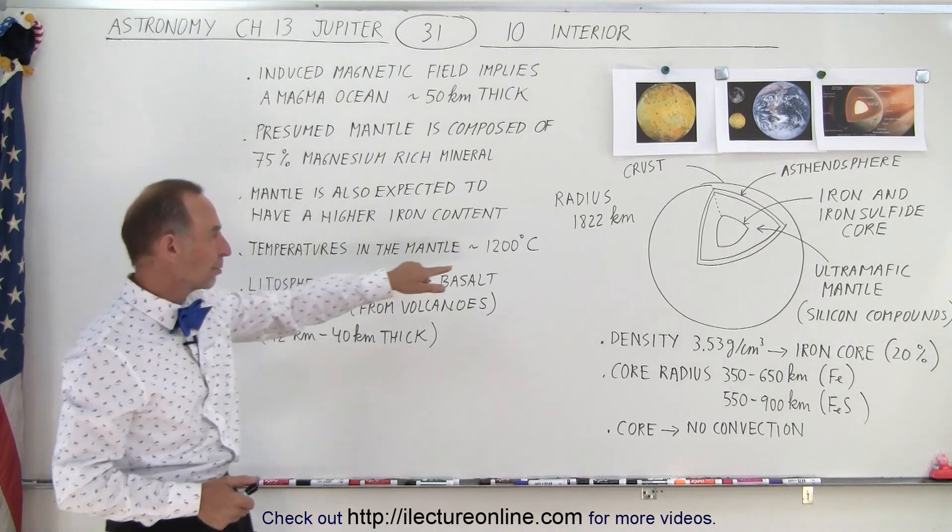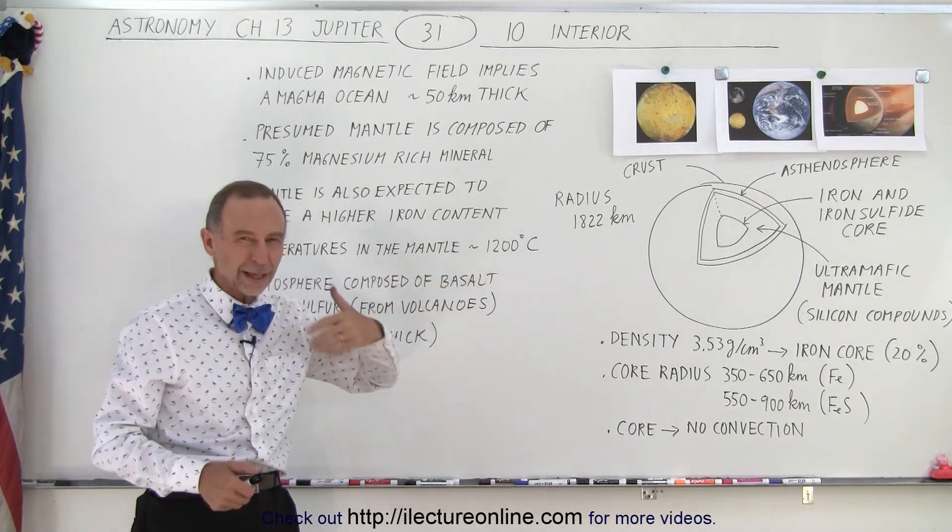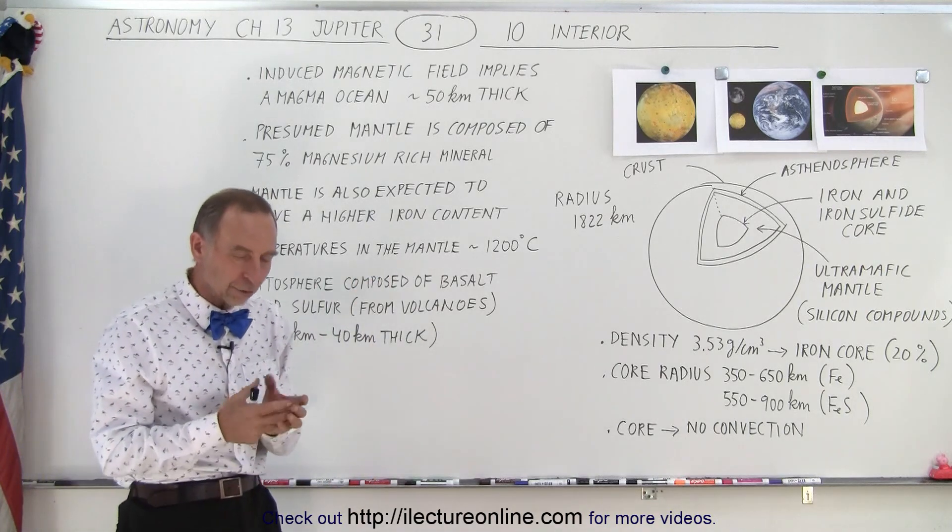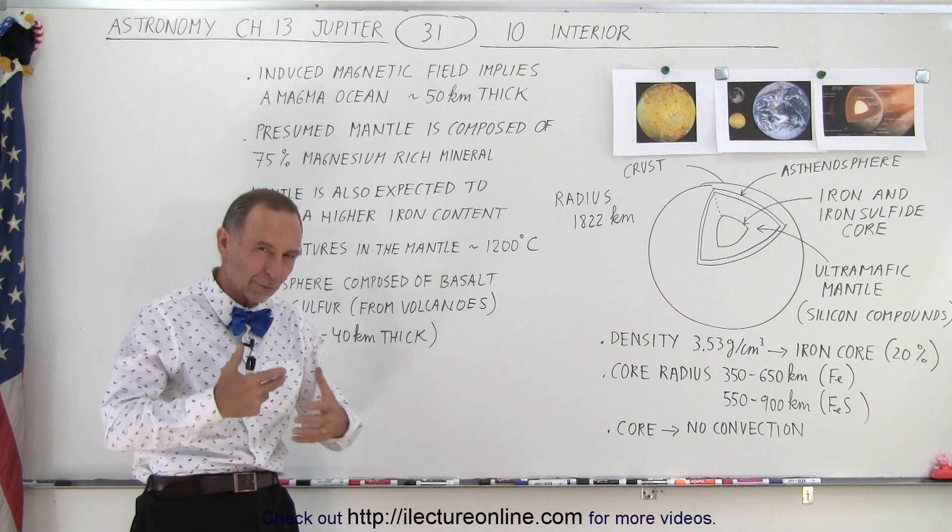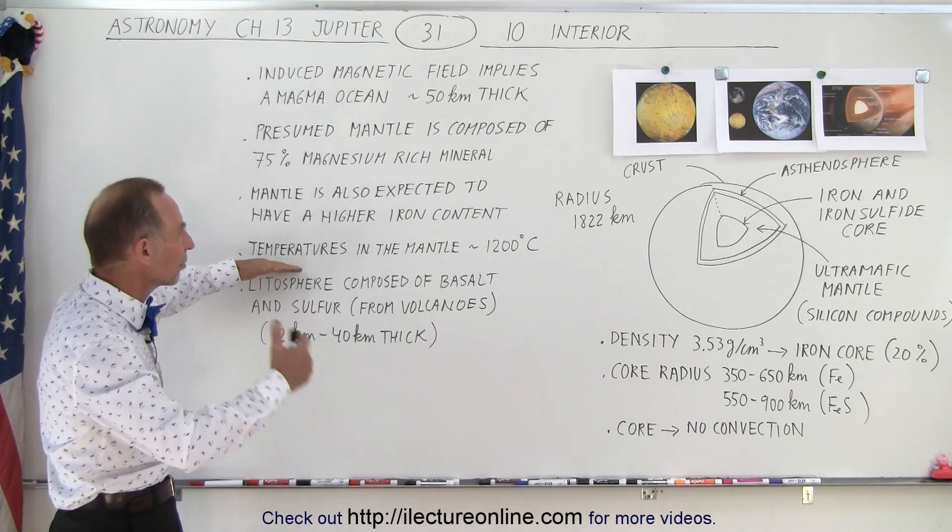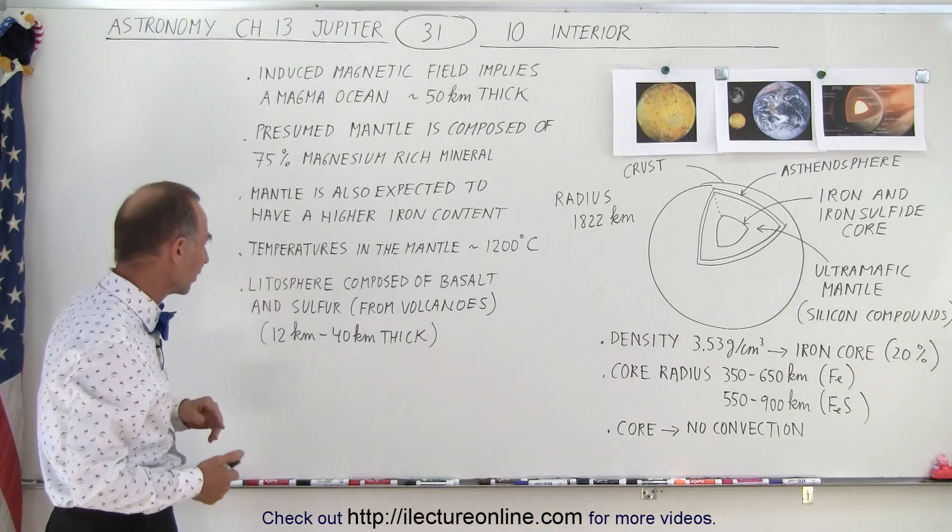Temperatures in the mantle are approximately 1,200 degrees Celsius, and that would then cause the mantle to melt or at least turn into some sort of movable liquid, and that would then cause the induced magnetic field.